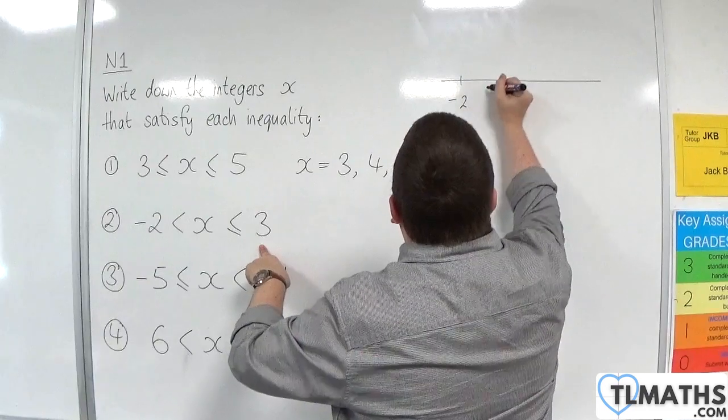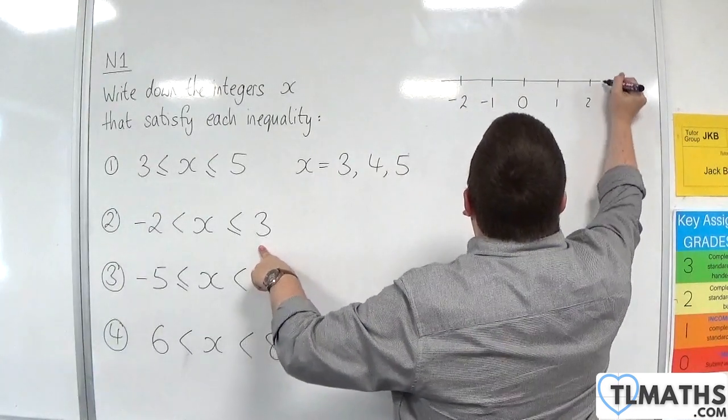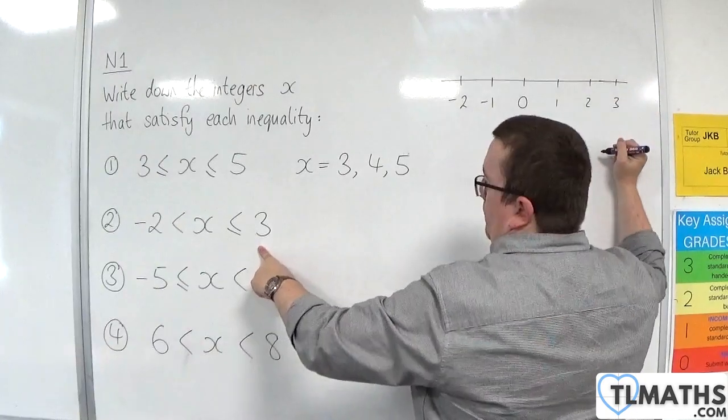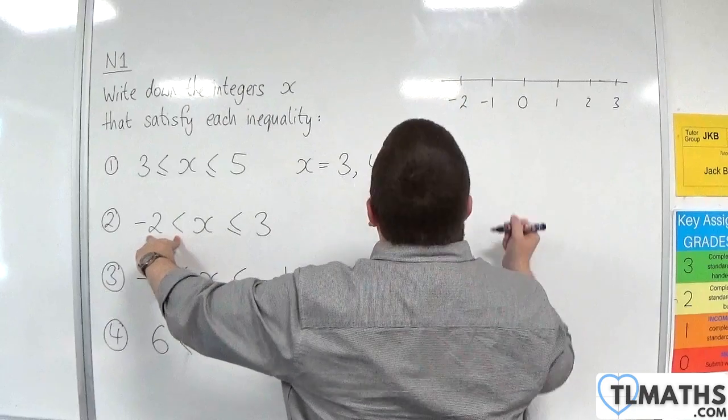So we have minus 2, minus 1, 0, 1, 2, 3. Now, we are not including minus 2, it's a strict inequality.